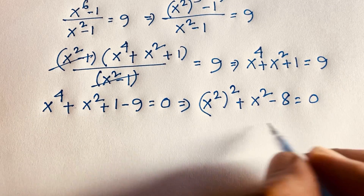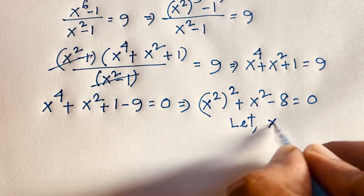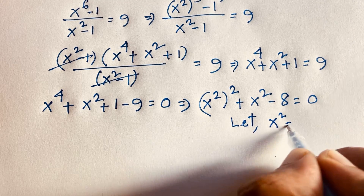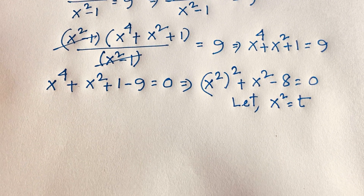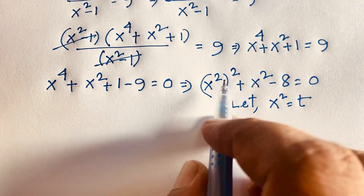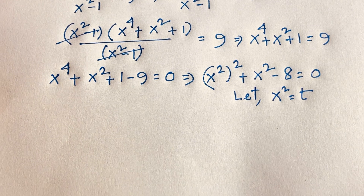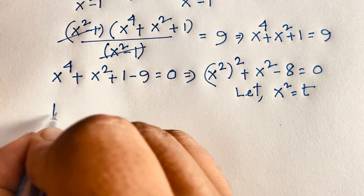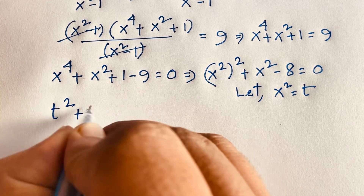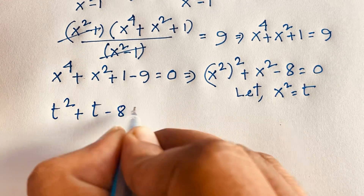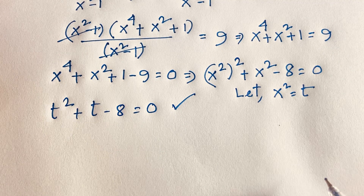At this moment let x squared equal t. So I can easily write t squared, because x squared is t. So it becomes t squared plus t minus 8 is equal to 0. It is a quadratic equation.